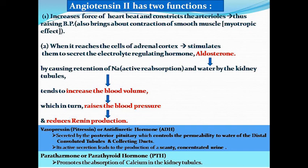This is vasopressin, which we also call pituitrin or ADH. It is released from the posterior pituitary and controls the permeability of the distal convoluted tubules and collecting ducts. Its active secretion leads to the production of scanty concentrated urine. The next hormone is parathyroid hormone, PTH, which promotes calcium absorption in the kidney tubules.